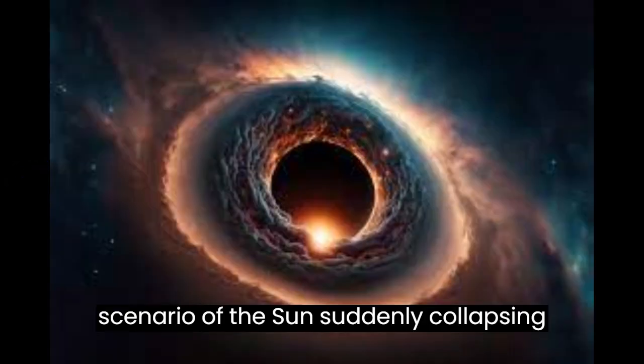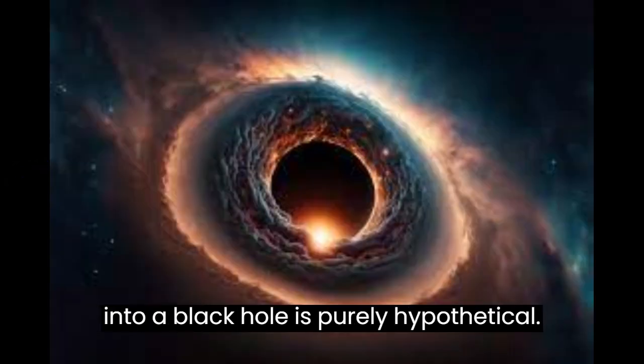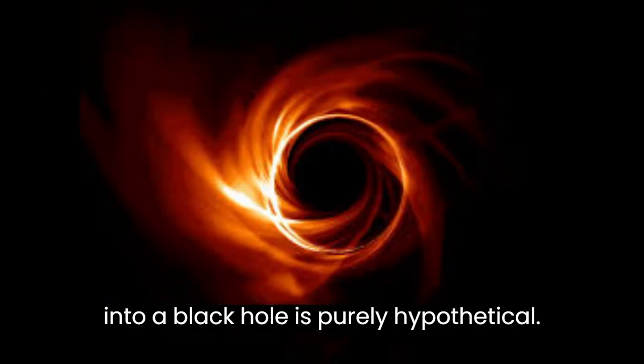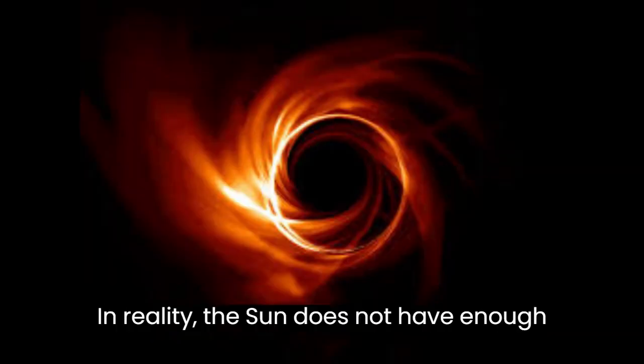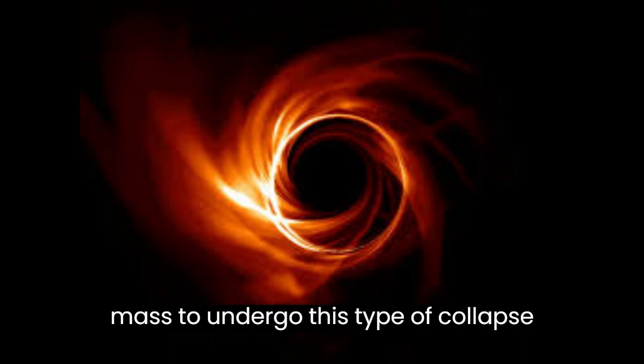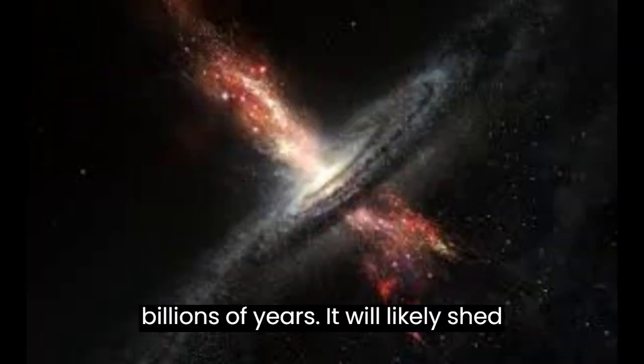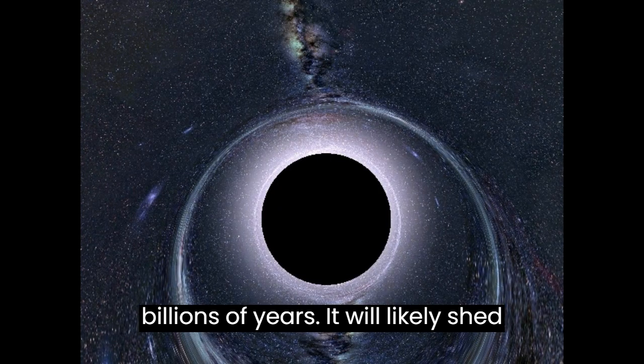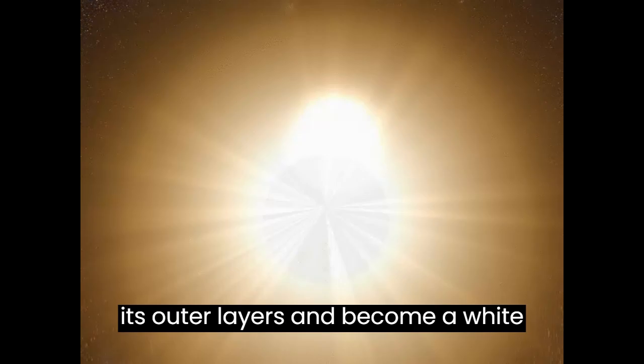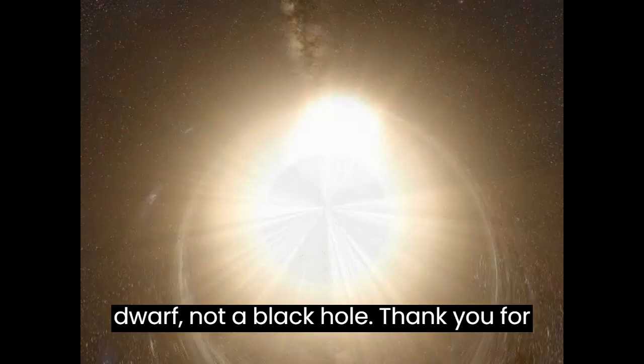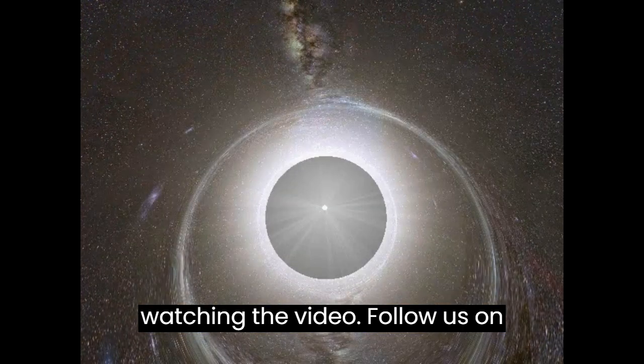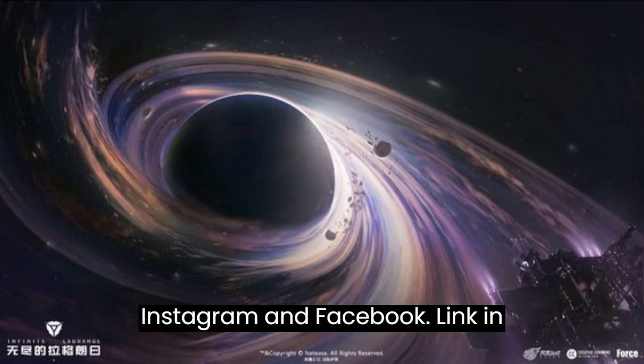It's important to note that the scenario of the Sun suddenly collapsing into a black hole is purely hypothetical. In reality, the Sun does not have enough mass to undergo this type of collapse. When the Sun exhausts its nuclear fuel in billions of years, it will likely shed its outer layers and become a white dwarf, not a black hole. Thank you for watching the video. Follow us on Instagram and Facebook, link in description.